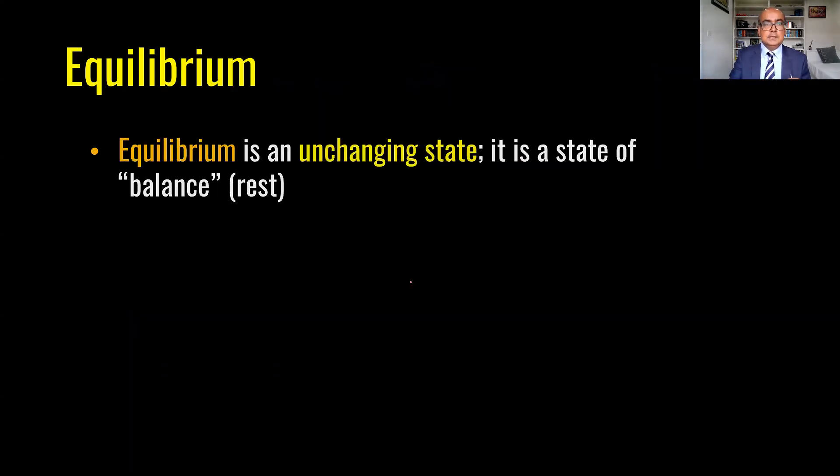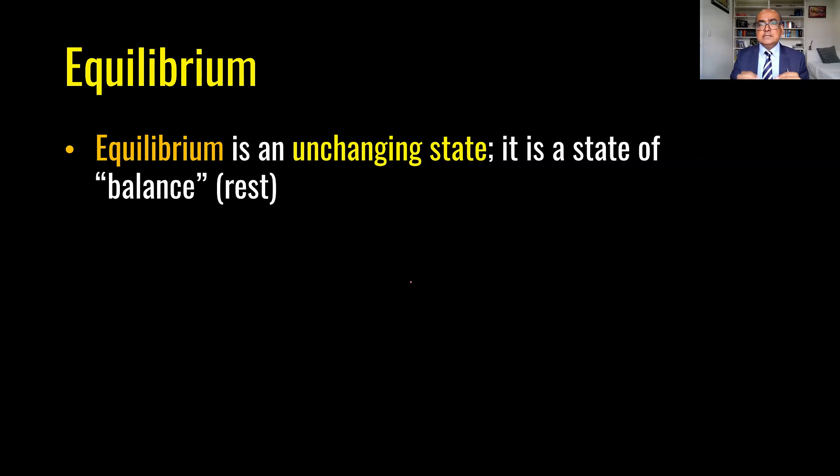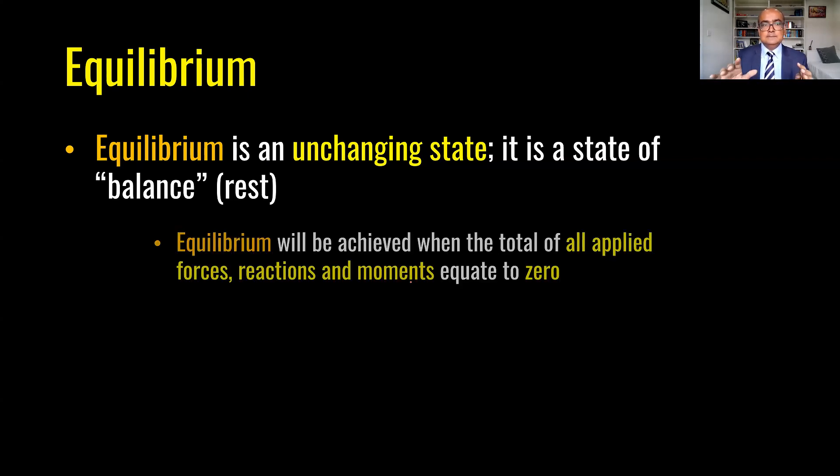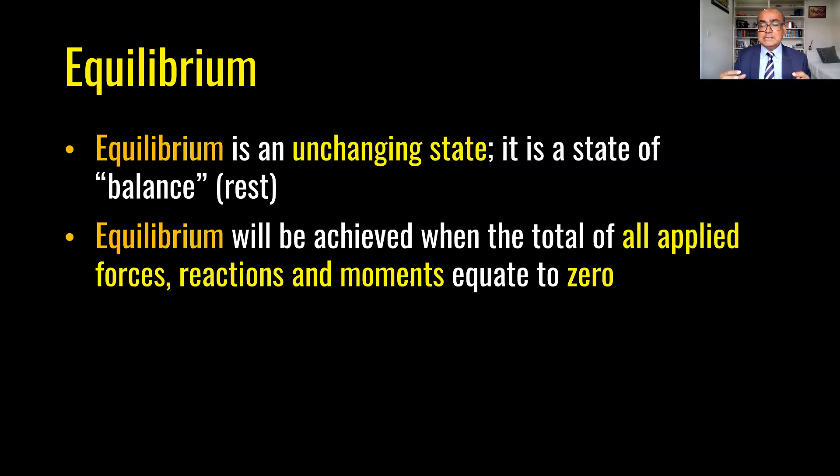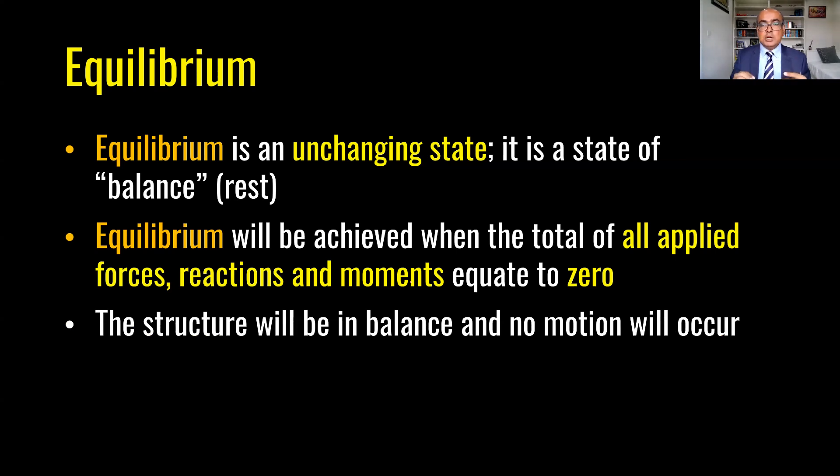What is equilibrium? Equilibrium is unchanging state where everything is balanced. Equilibrium can be achieved when all forces that we apply on a structure, loads including reactions and moments, is equal to zero. The structure will be in balance and no motion will occur if it is in equilibrium. And here are some examples of equilibrium.